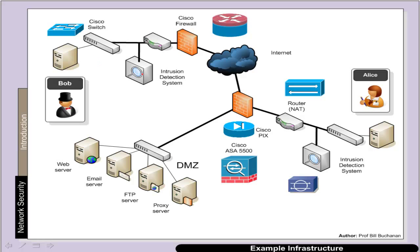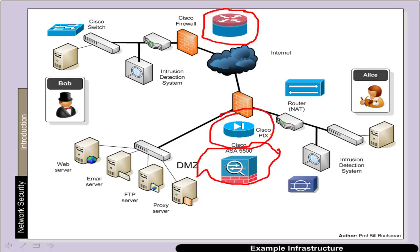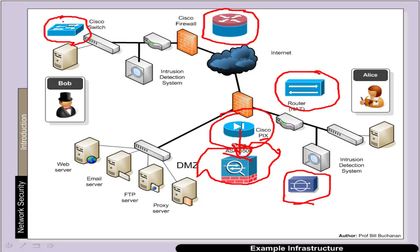Some of the symbols we'll see for firewalls, switches and routers include a router running firewall software — in this case a Cisco firewall. We have a PIX ASA, which is a stateful firewall, and the PIX and ASA firewalls are the new range from Cisco. We'll also see network address translation devices, intrusion detection systems and Cisco switches.